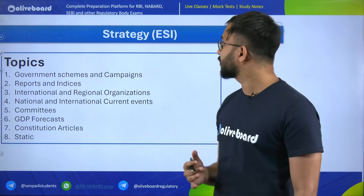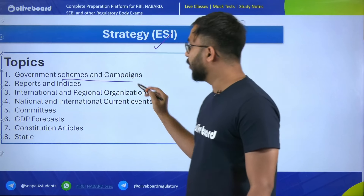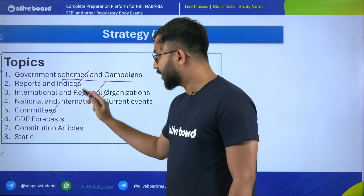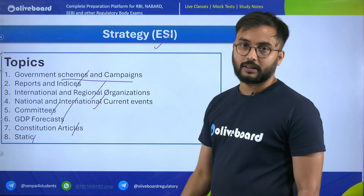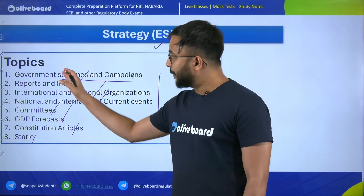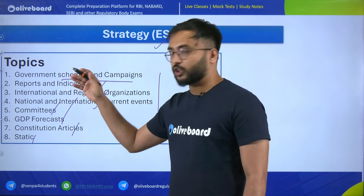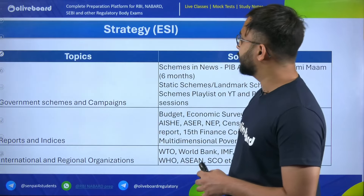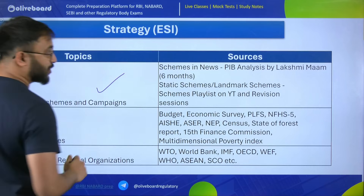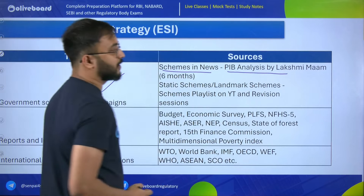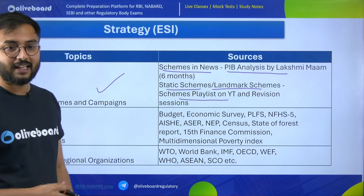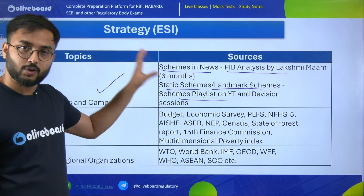Next is the strategy for current affairs topics and their sources. First, government schemes and campaigns: follow schemes in news and PIB analysis done by Lakshmi ma'am for the last six months. For static schemes and landmark schemes, see the playlist on our YouTube channel as well as revision sessions on Olive Board Regulatory Bodies YouTube channel — it's a one-stop solution. Second, reports and indices: these include the budget, economic survey, PLFS, NFHS, ISA report, ESSA report, census, state of forest report, 15th Finance Commission, multidimensional poverty index, and various other socio-economic reports.